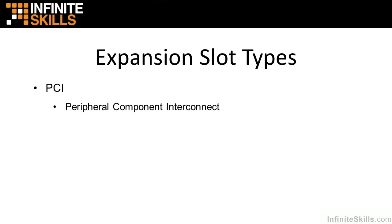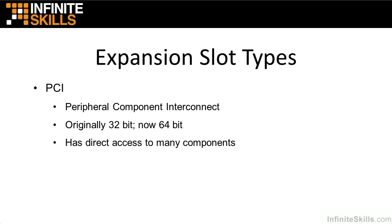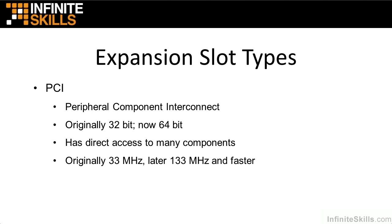PCI stands for Peripheral Component Interconnect. It was originally a 32-bit bus, meaning 32 bits of data could pass at one time across the motherboard through the expansion slot — and it's now 64-bit, doubling the data width. PCI had direct access to many components on the motherboard, making it faster and more efficient. It originally operated at 33 MHz — millions of processes per second — and later came up to 133 MHz and even faster. PCI slots are again usually the white slots you see on the motherboard.